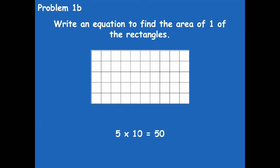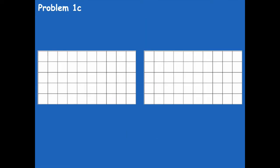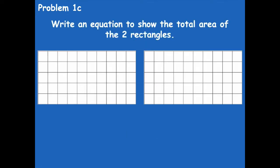Here's what I came up with: 5 times 10 equals 50, because I multiplied each side — the width times the length — to come up with 50. Now let's look at problem 1C. I want you to write an equation to show the total area of the two rectangles. If we know that one rectangle's area is 50, what would be the total area of two rectangles? Write an equation for problem 1C and then click play when you're ready.